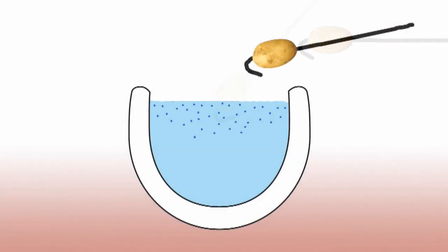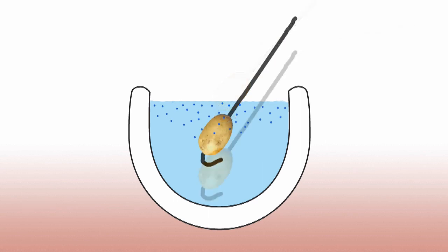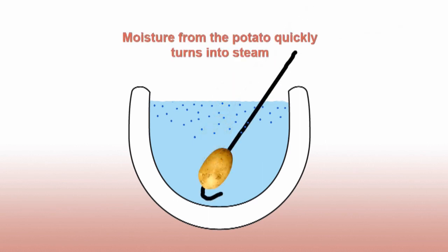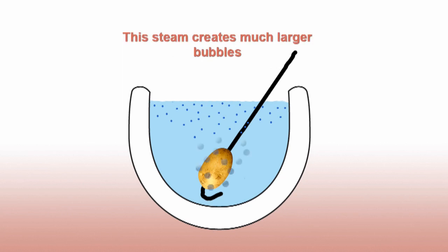Basically what happens when the potato is dipped into the hot glass, the moisture from the potato quickly turns into steam. This burst of steam creates much larger bubbles.